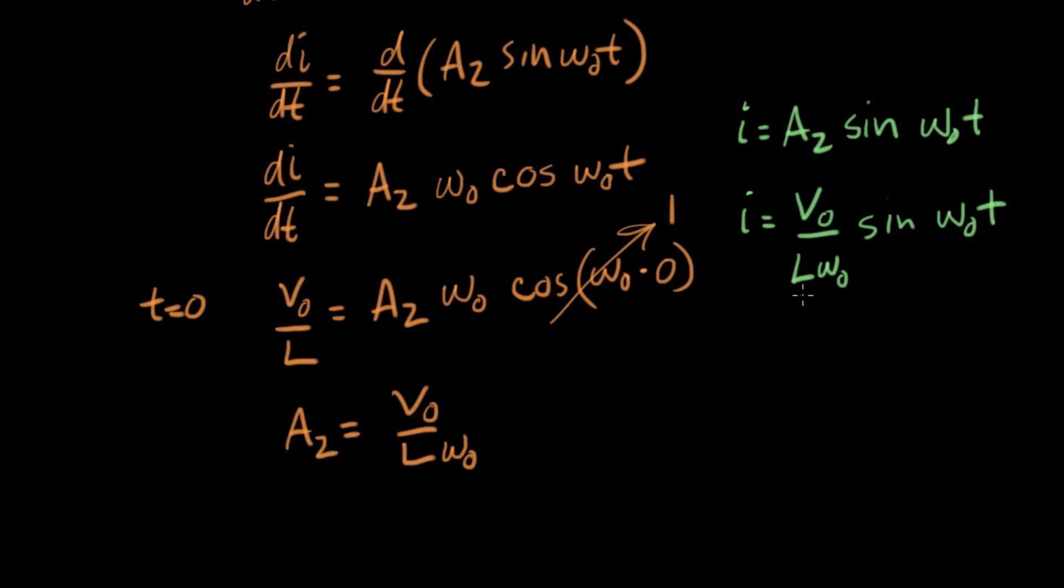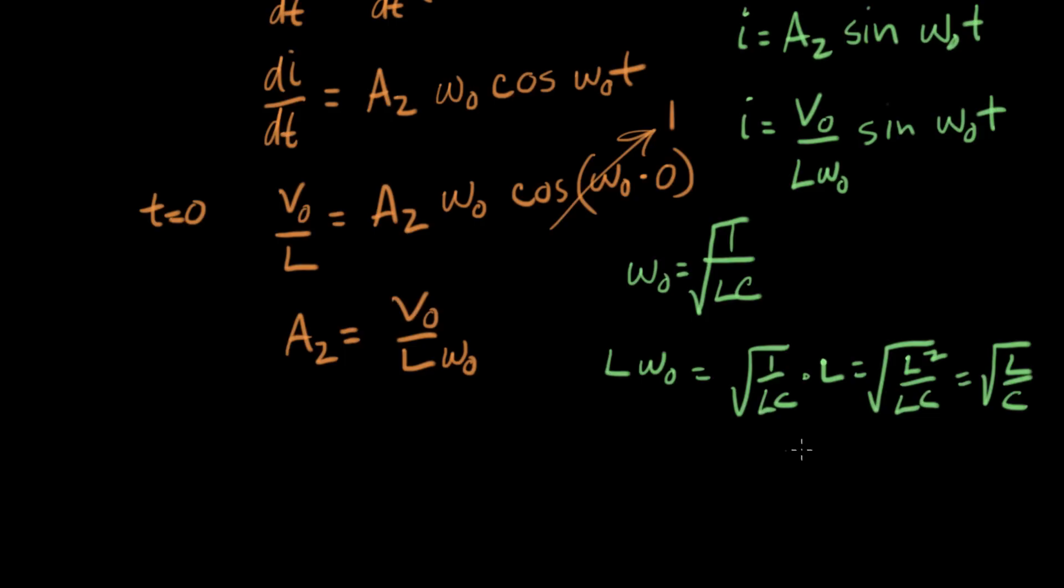I want to go back and plug in our value for omega-naught. We said omega-naught equals one over the square root of LC. So L omega-naught equals square root of L over C. Lastly, one over L omega-naught equals square root of C over L.